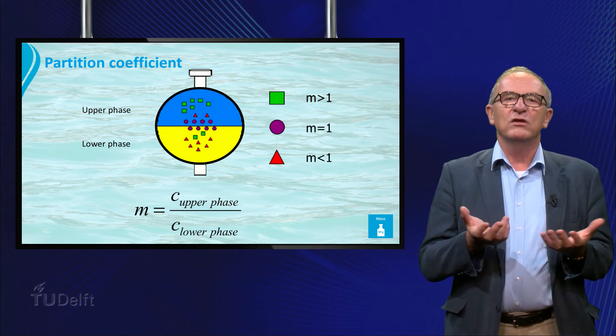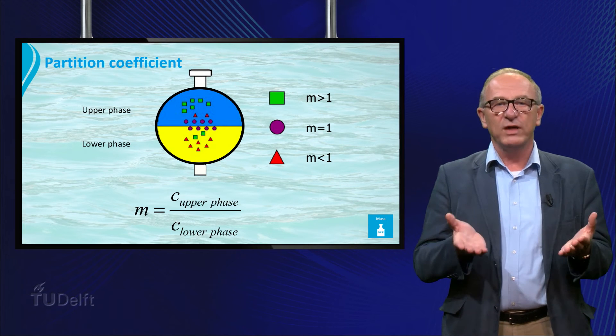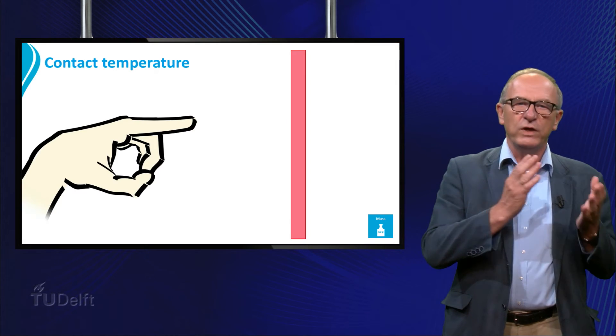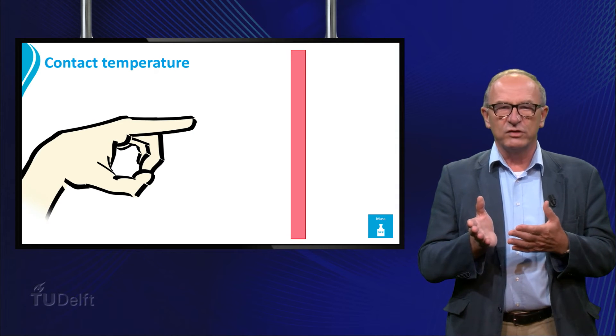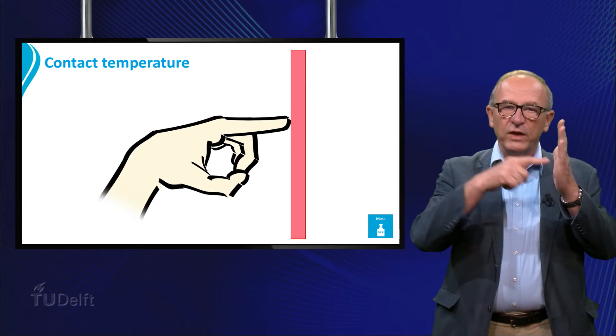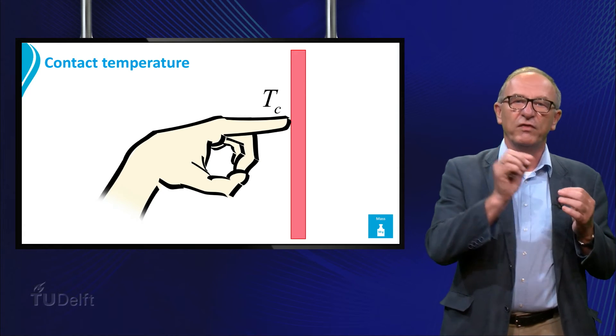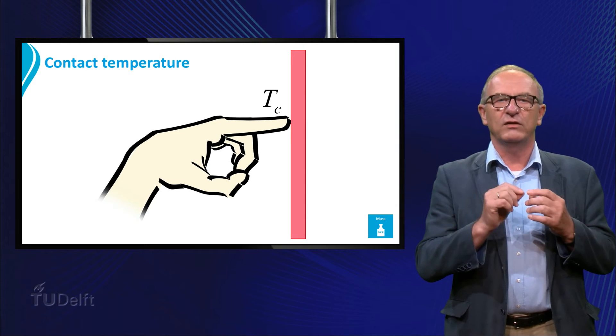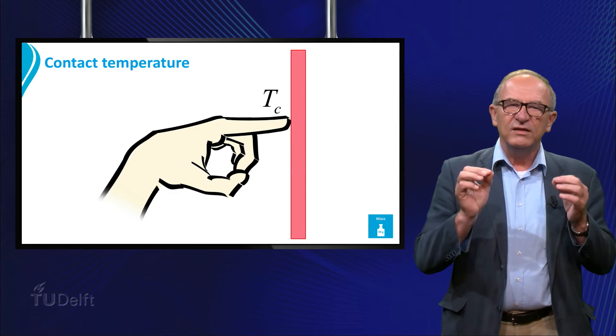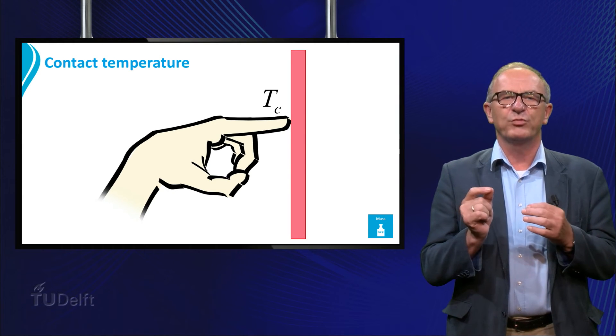But we could raise the question, why is the concentration not the same, just like with the interfacial temperature? So if we have two materials with a different temperature, say your finger and a hot plate, and if they contact each other, we have immediately a contact temperature Tc between the finger phase and the plate phase.